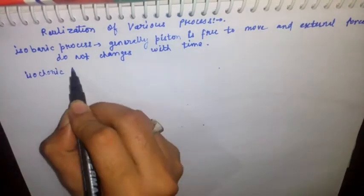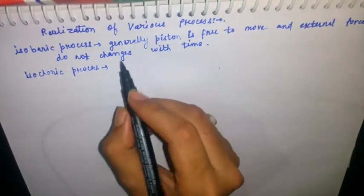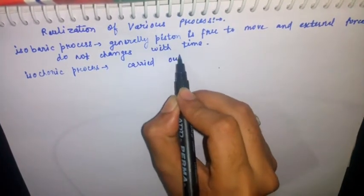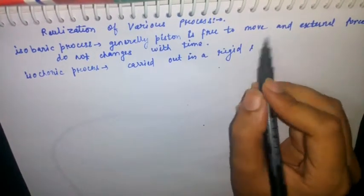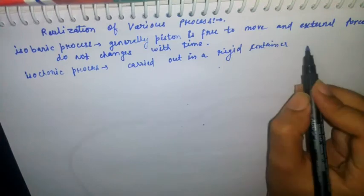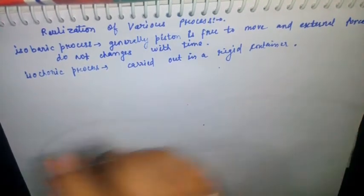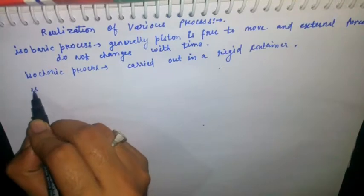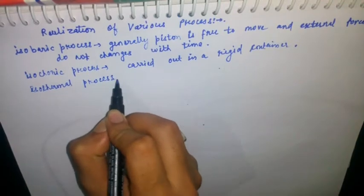For the isochoric process, when the whole process is carried out in a rigid container, such processes come under the category of the isochoric process. So isochoric processes are carried out in a rigid container.